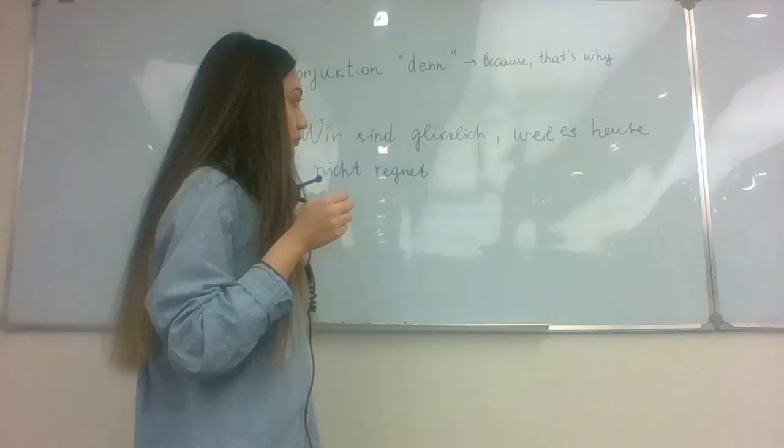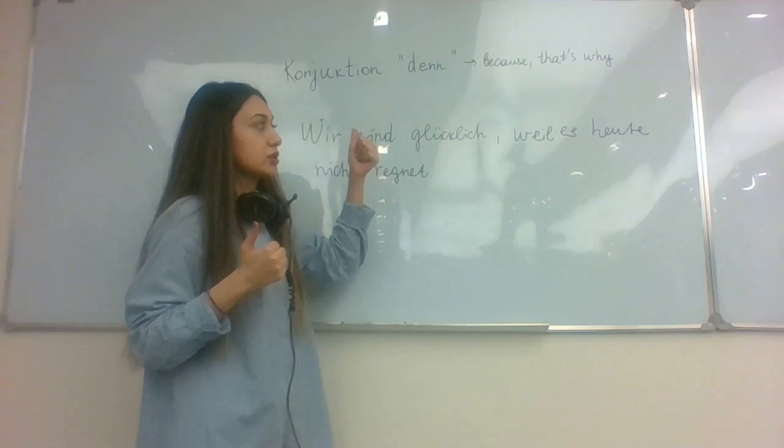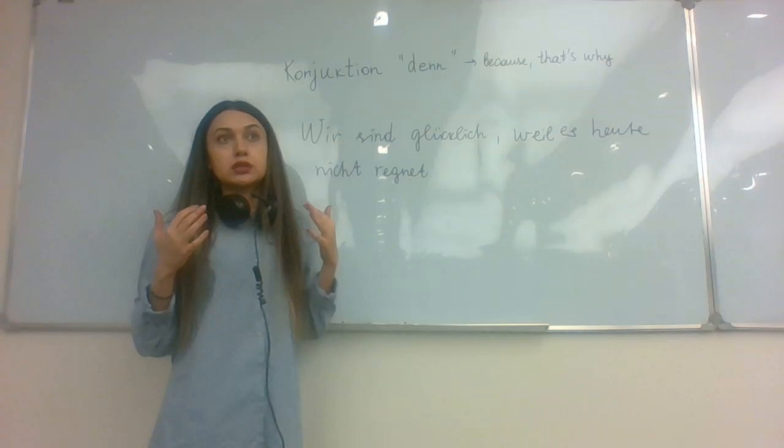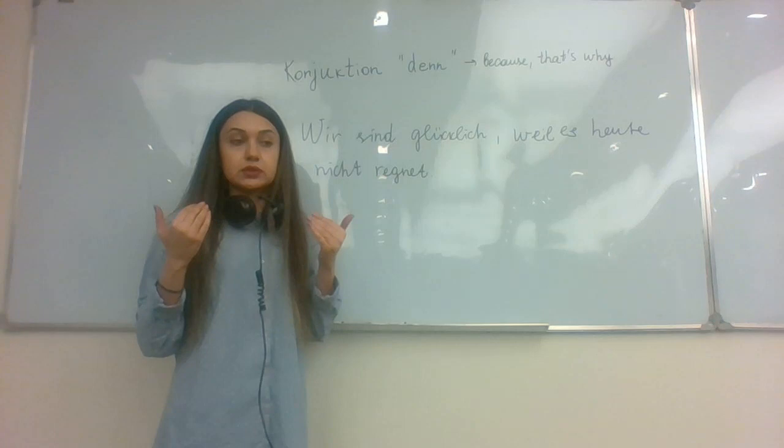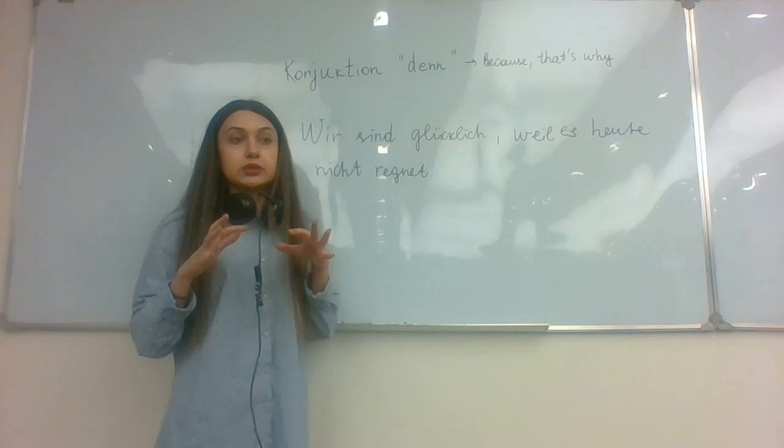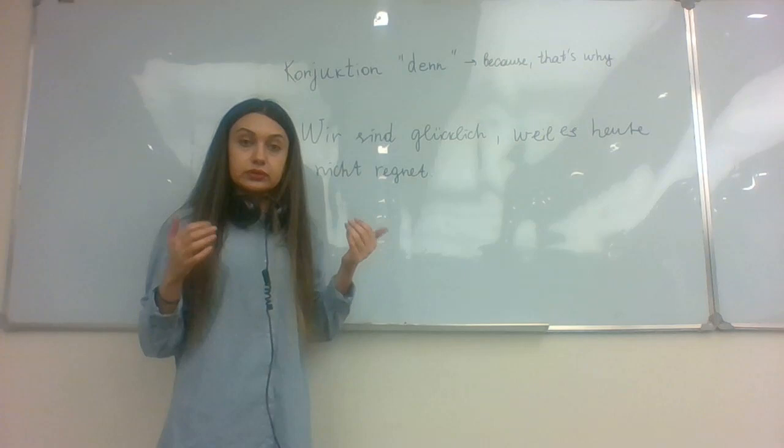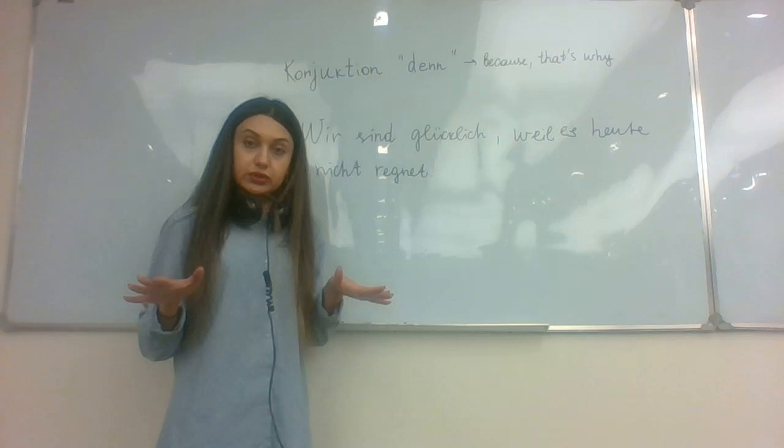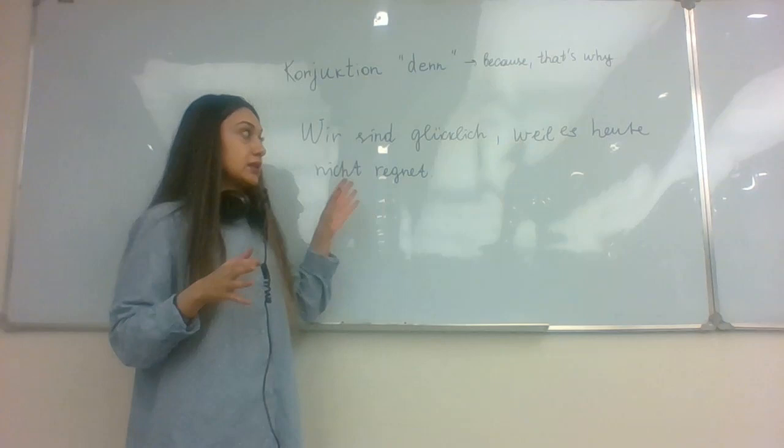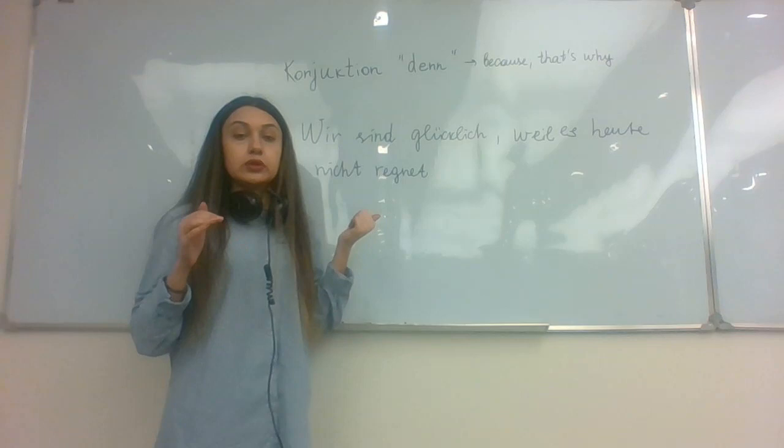I think it's already clear for you when and how we use the conjunction weil and denn. We see that they are similar, almost similar. I mean they have both the same meaning, but in the same time they are different because of the sentence structure. If we want to use our sentence denn, then everything stays untouched. We don't change the position of the verb in the sentence, as I showed here in the examples previously, some minutes ago.